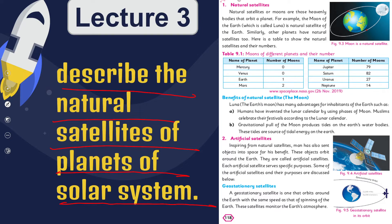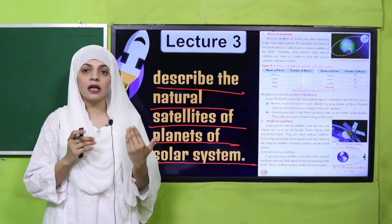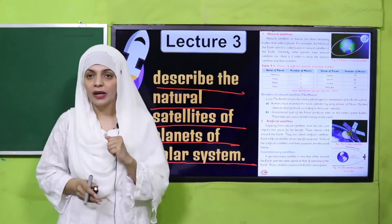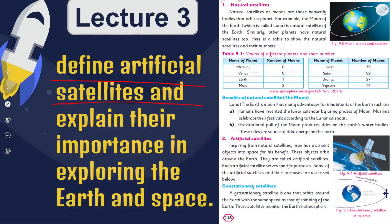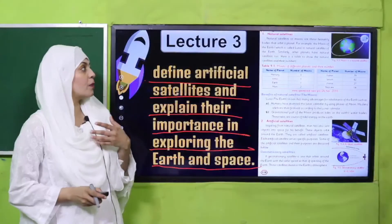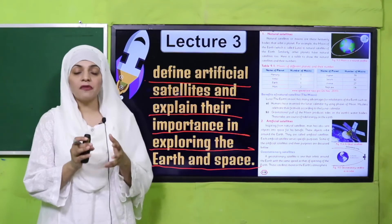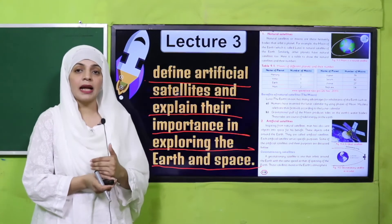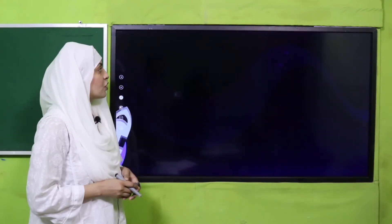In Lecture Number 4, the students will be able to describe the natural satellites, planets, and the solar system. Space mein natural satellites hain jo ke har planet ke irgird revolve karti hain — bache solar system, natural satellites, aur planets ke baare mein discuss karenge. Then, students will move forward to define artificial satellites and explain their importance. Natural satellites ke baare mein padhne ke baad, artificial satellites ke baare mein baat kiya jaega — inki kya importance hai aur in se kya kya kaam liya jata hai.